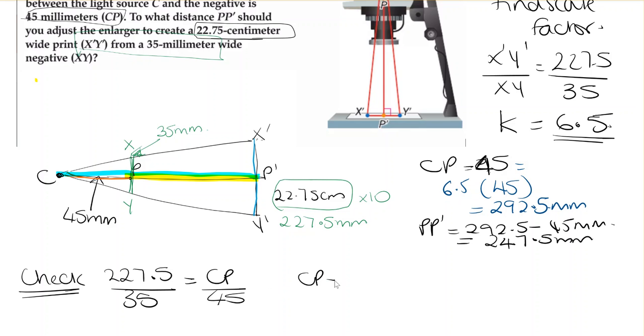Rearranging, CP equals 45 multiplied by 227.5 divided by 35, which is 292.5. Then we minus the 45, which gives us 247.5 millimeters.